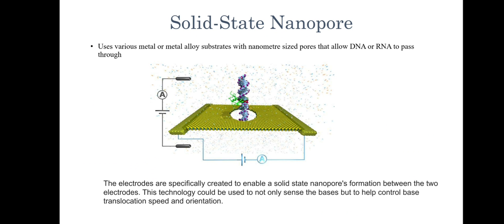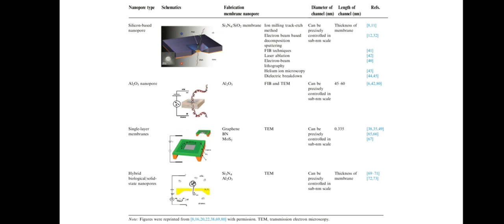Talking about the second type, solid-state nanopores, we use various metal or metal alloy substrates with nanometer-sized pores that allow the DNA or RNA to pass through. Usually we use silicon layer or graphene. In the diagram shown here, we have used graphene as the membrane. The fine depth of the graphene membrane provides optimal spatial resolution along the DNA. The electrodes are specifically created to enable solid-state nanopore formation between the two electrodes. Examples of solid-state nanopores include silicon-based nanopores, aluminum oxide nanopores, and single-atom membranes like graphene.